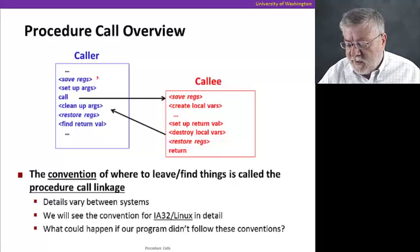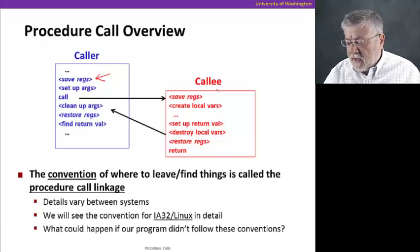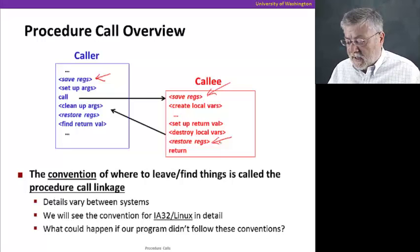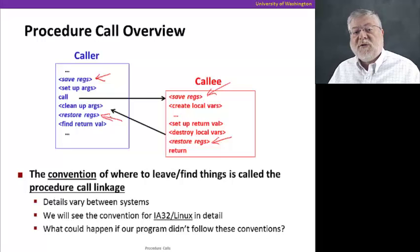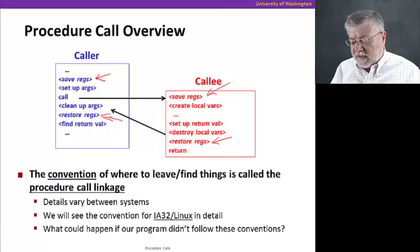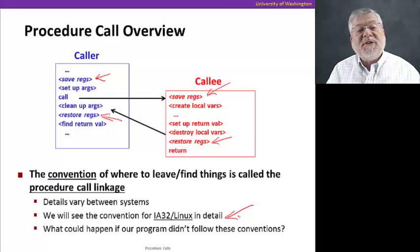We now embellish our diagram a little bit. We've added that maybe we need to save some registers before we get the call set up. The callee might want to save some other registers. We have to decide how we're going to distribute that work. If it saves some registers, it needs to make sure to restore them before it returns, so that the caller will find the same contents there. Similarly, the caller may want to restore some registers after the callee is done. This convention of where to find these things and how to coordinate all of this activity is called the procedure call linkage.